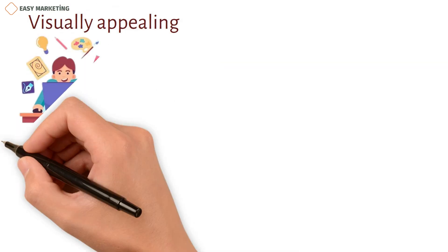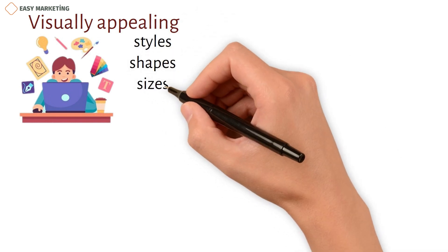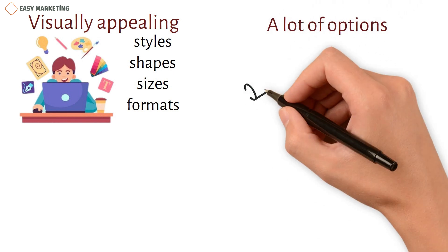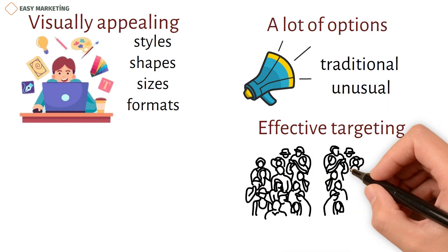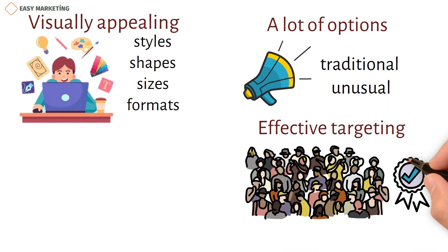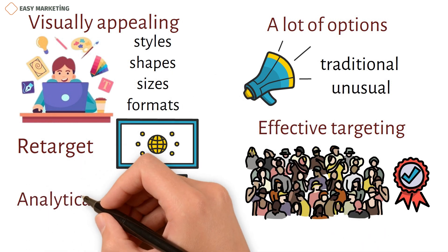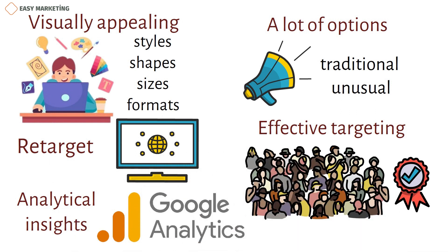Visually appealing: since these ads are often graphic or visual, advertisers can try out different styles, shapes, sizes, and formats to see what consumers like. You have a lot of options — you can be as traditional or as unusual as you want. Effective targeting: with display advertising, you can choose your audience based on a number of factors, ensuring the highest level of engagement. Retargeting makes it possible to bring back users who previously visited your site. Analytical insights: you can use a program like Google Analytics to track how well your display ads work.